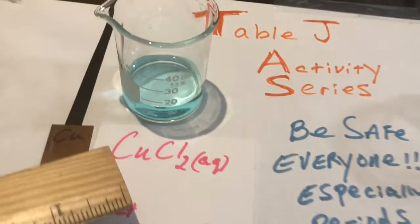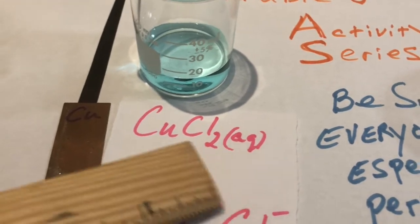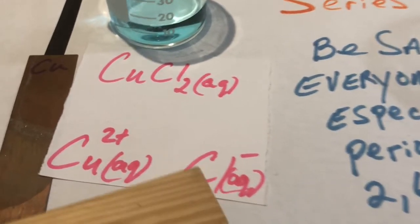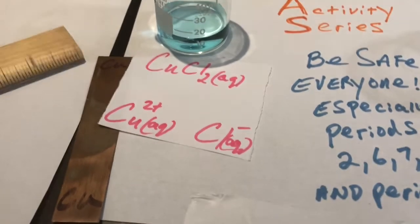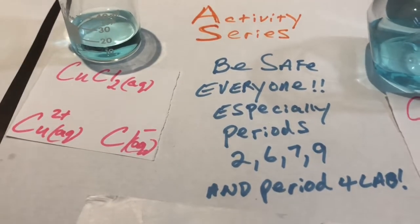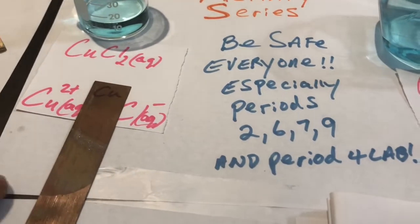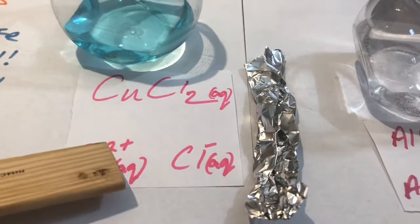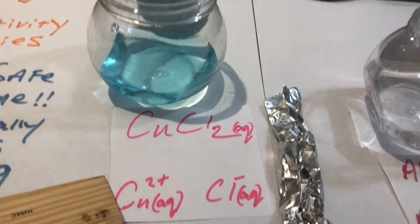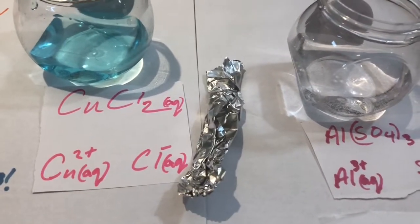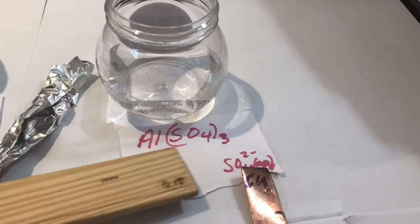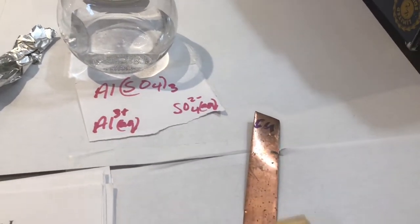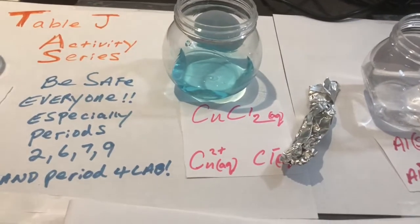The experiment today involves copper chloride as one of my solutions. The copper chloride solution has two ions in it — copper ions and chloride ions. The chloride ions are spectator ions, and the copper ions are the ones we're interested in. We're going to take a piece of copper metal and place it into the solution. The second setup also has copper ions with chloride ions, but this time we will place a piece of aluminum inside of it. The third setup has aluminum sulfate, consisting of aluminum ions and sulfate ions, and we're going to place copper solid into the aluminum sulfate solution.